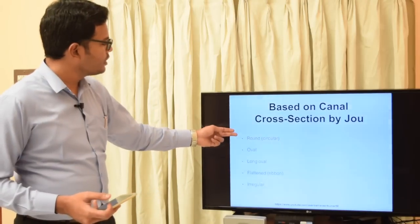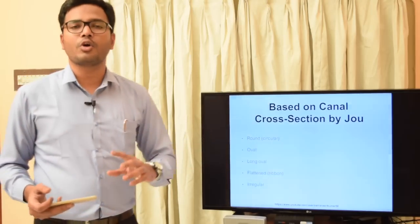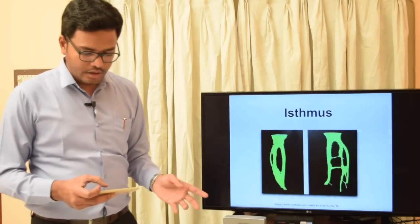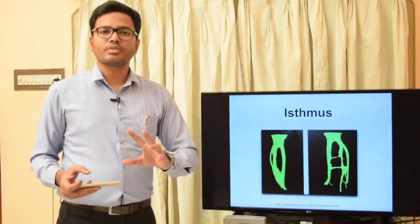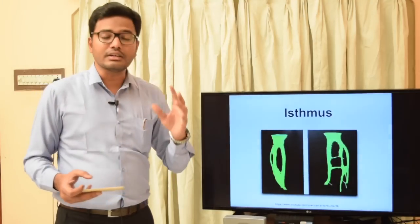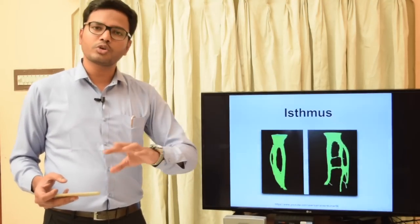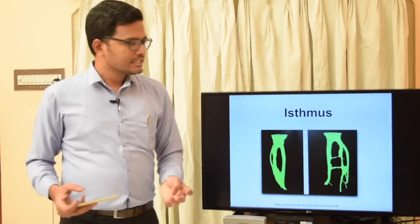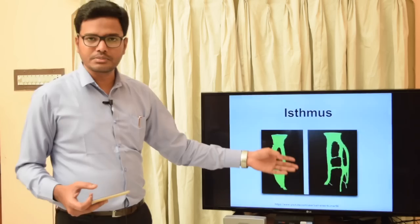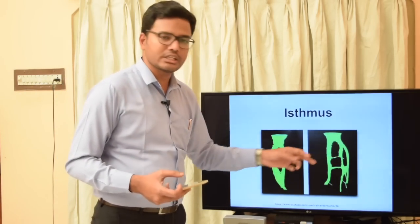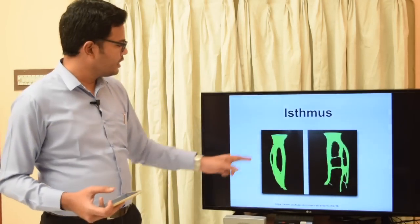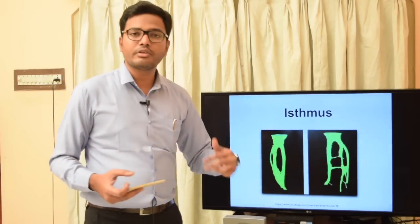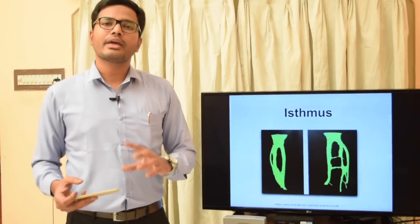Now let's discuss the isthmus within a canal. In English, an isthmus is a piece of land connecting two larger areas with water on either side. Similarly, in endodontics, an isthmus is a narrow communication between different canals or within a canal. You can see within a single canal a narrow communication, and in another image a faint communication between two canals. Kim et al. have given a classification of isthmus with five types.